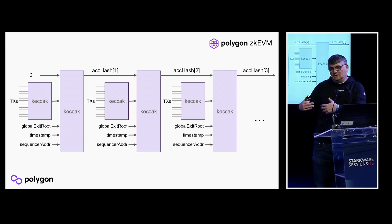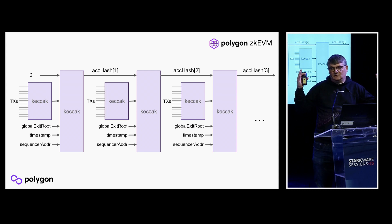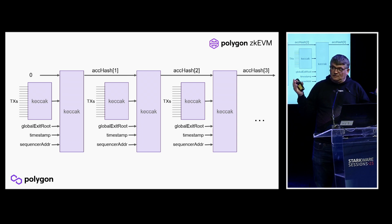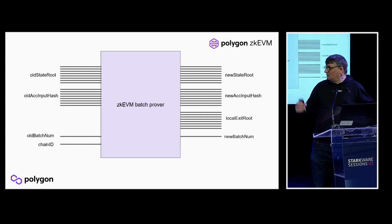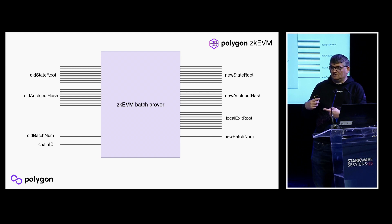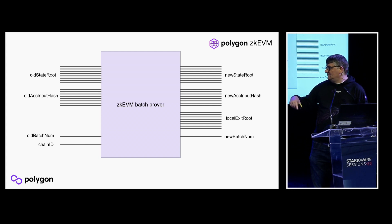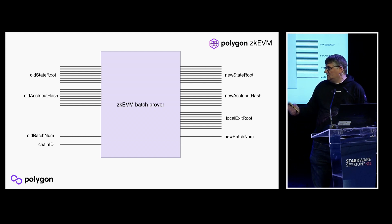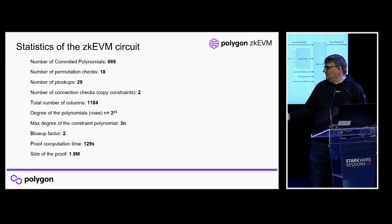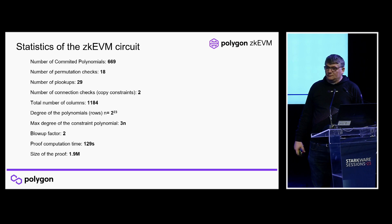This allows us, for example, to prove a segment from block 4 to block 14. The input accumulated hash and the output accumulated hash must match. For a single block, there's also the local exit root, which is mainly for the bridge — transferring information from L2 to L1. We also have the old and new batch numbers, so the proof increments by one batch (e.g., batch 3 to 4, or 4 to 5), and the chain ID.